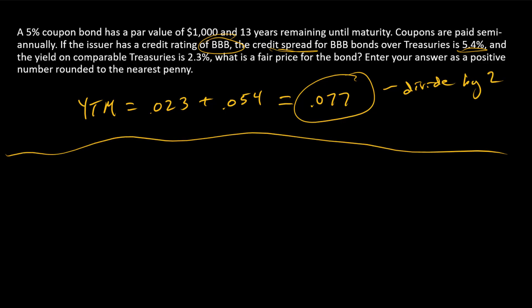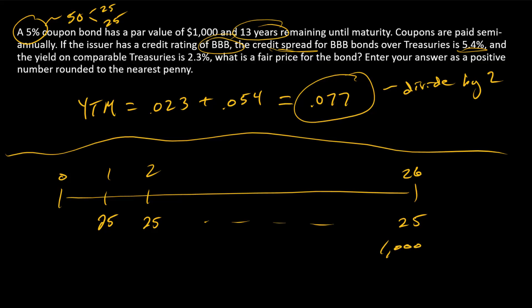So now we have just a straight up bond valuation problem, where we have 13 times 2 is 26 ticks on the timeline. We have 5% coupons, so $50 per year. It's going to be split into two $25 payments. So I'm going to have $25 here as my annuity payment, and then a par value repayment of $1,000 at the end.